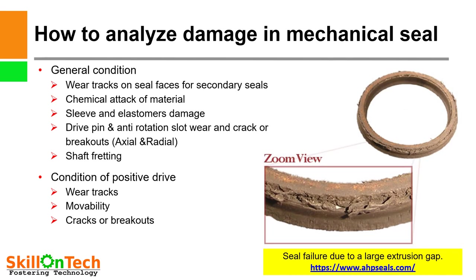How to analyze damage in a mechanical seal: A picture of damaged components of a mechanical seal is shown for reference, where you can see seal failure due to a large extrusion gap. If rotating parts have large clearances, they can be a cause of failure due to extrusion. General conditions and conditions of rotating drives shall be noted while analyzing the damage in a mechanical seal.